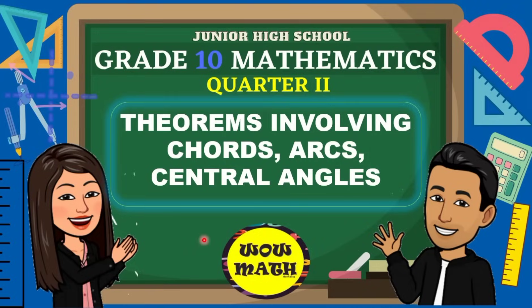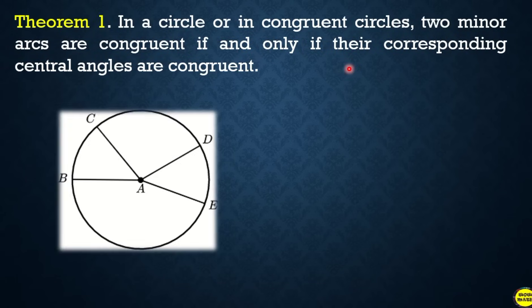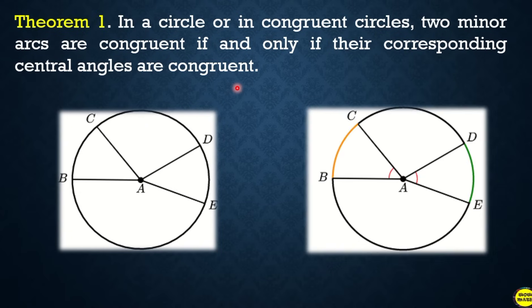Good day everyone. In this video lesson we will discuss theorems involving chords, arcs, and central angles. For the first theorem: in a circle or in congruent circles, two minor arcs are congruent if and only if their corresponding central angles are congruent.